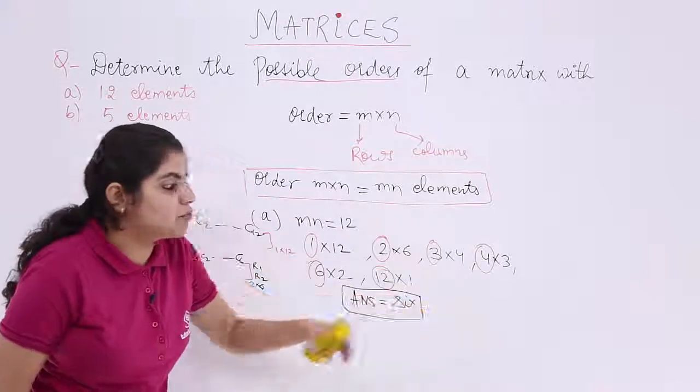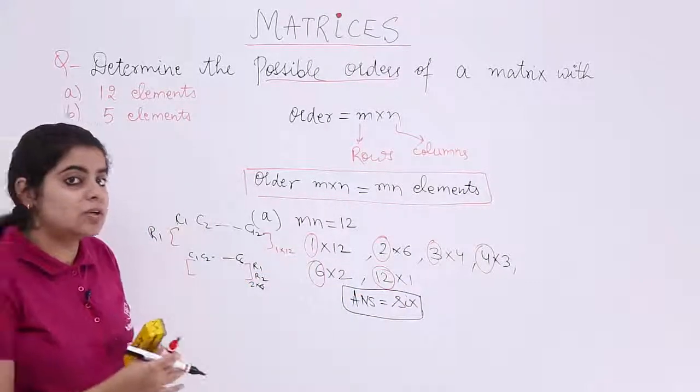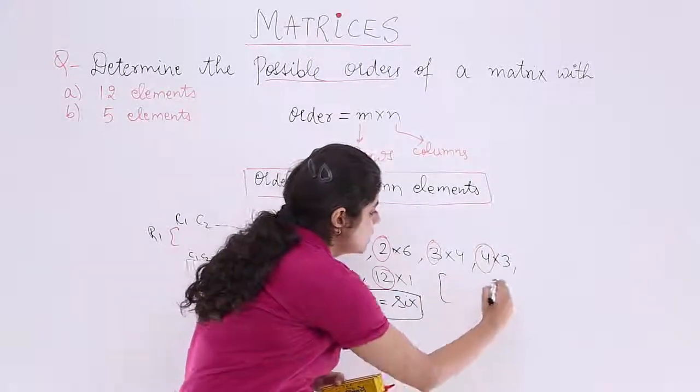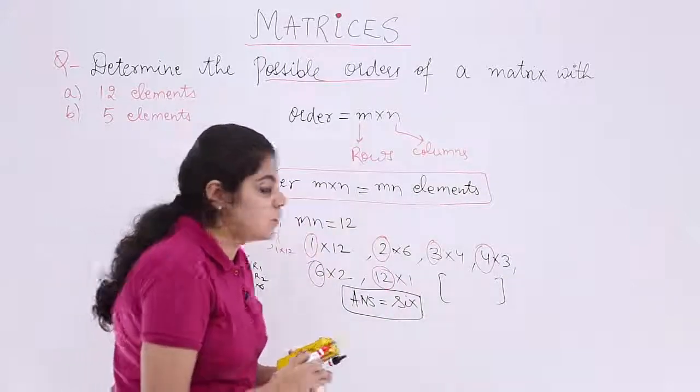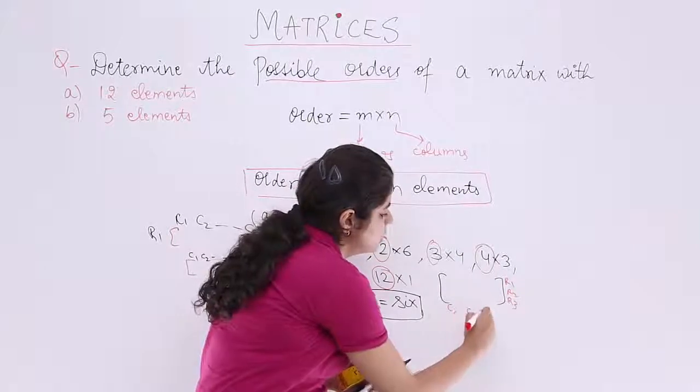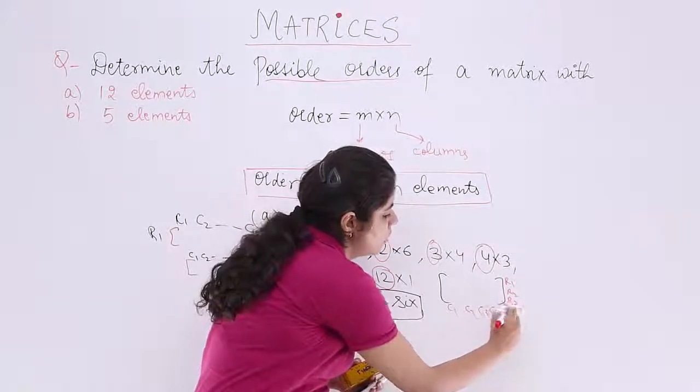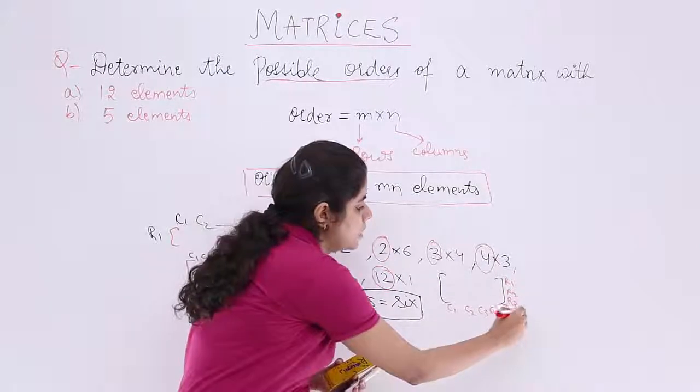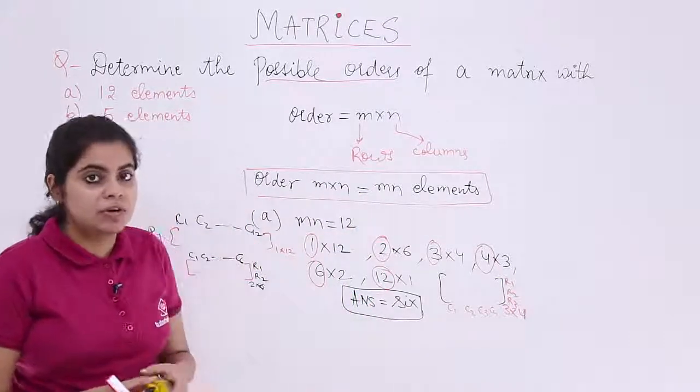Next is what? 3 by 4. 3 by 4 means 3 rows and 4 columns. So it is R1, R2, R3 and C1, C2, C3, C4 which is 3 by 4. So are you getting what this question signifies?